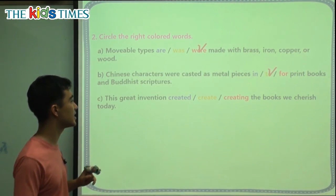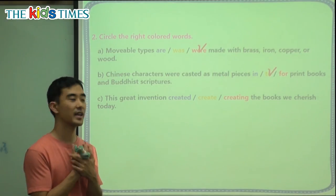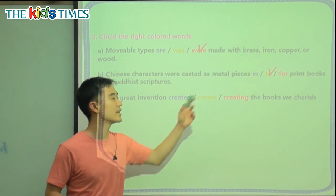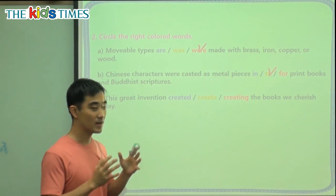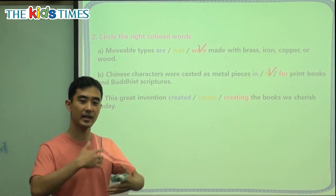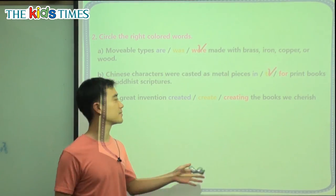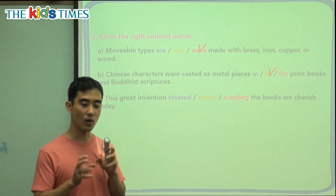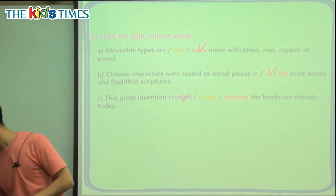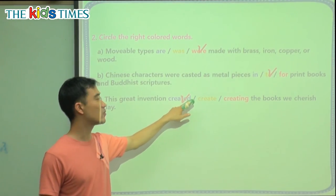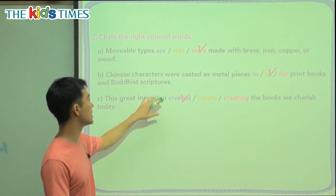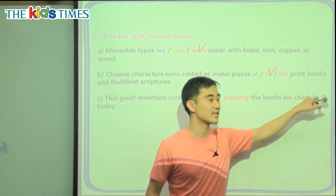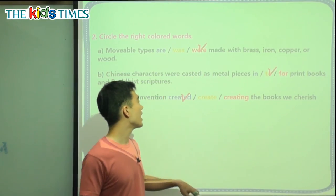Question C: This great invention, blank, the books we cherish today. This is a past tense question — 'creating' is happening now or was happening, so that's not right. 'Create' is present tense. The only past tense verb here is 'created' because it has the '-ed' ending, meaning it's from the past. So this invention was created, or made, before. And today, we cherish it — 'cherish' is present tense, not 'cherished.' We cherish it today, we love it today, and we created it before.